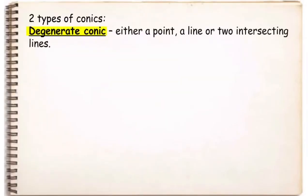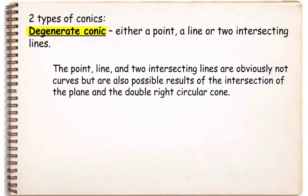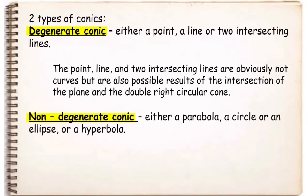There are two types of conics. We have degenerate conics, which include a point, a line, or two intersecting lines. The point, line, and two intersecting lines are obviously not curves, but are also possible results of the intersection of the plane and the double right circular cone. On the other hand, non-degenerate conics are either a parabola, a circle, an ellipse, or a hyperbola.